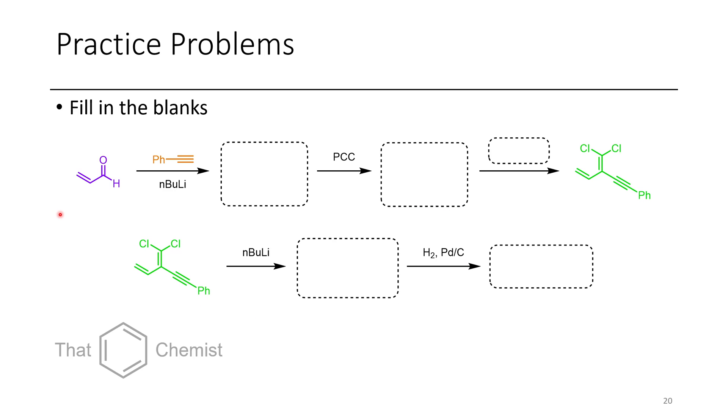And in the final problem, I'd like you to show what would occur if you treated acrylene with lithiated phenylacetylene. The product of that reaction is then oxidized by PCC, and then under some set of conditions you have to end up with this vinyl dichloride, which then undergoes a lithiation reaction, which might do something based on what we just talked about, and then you have to hydrogenate the final compound.